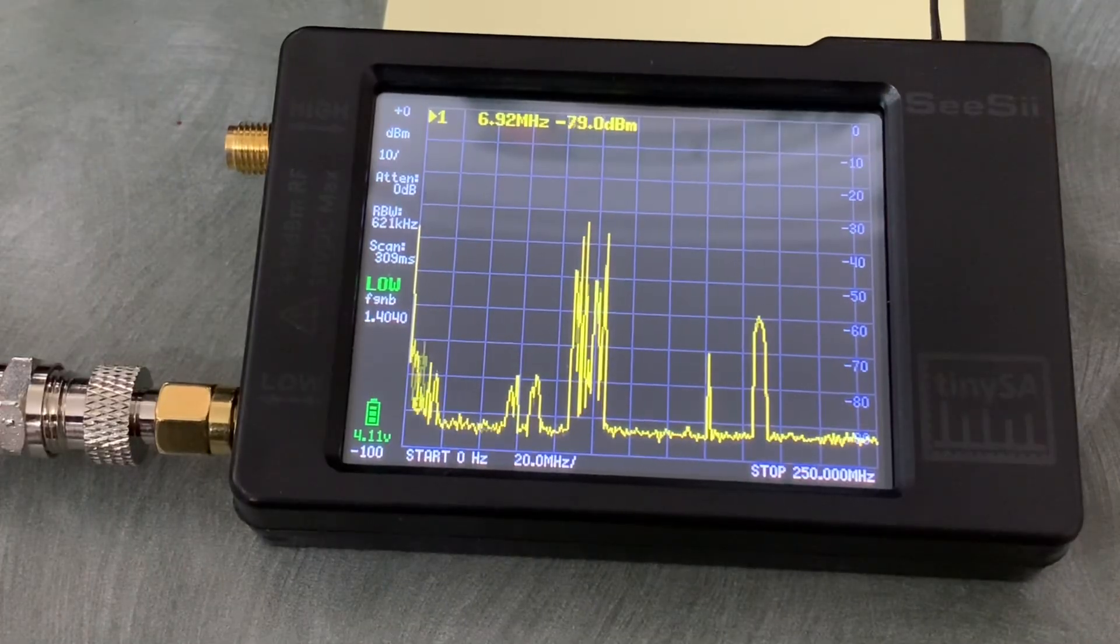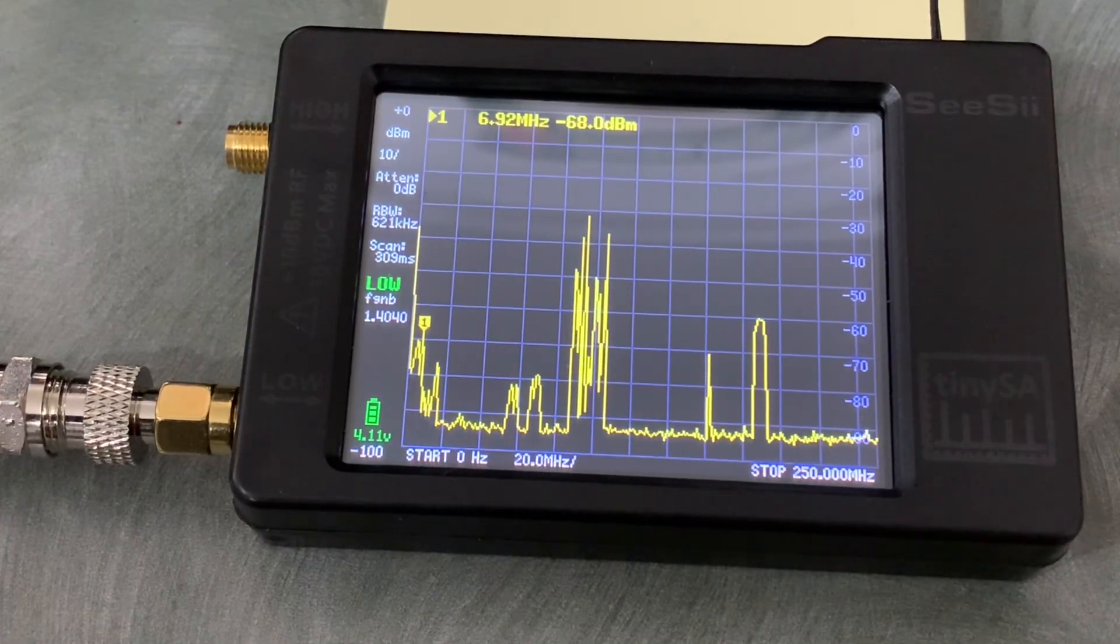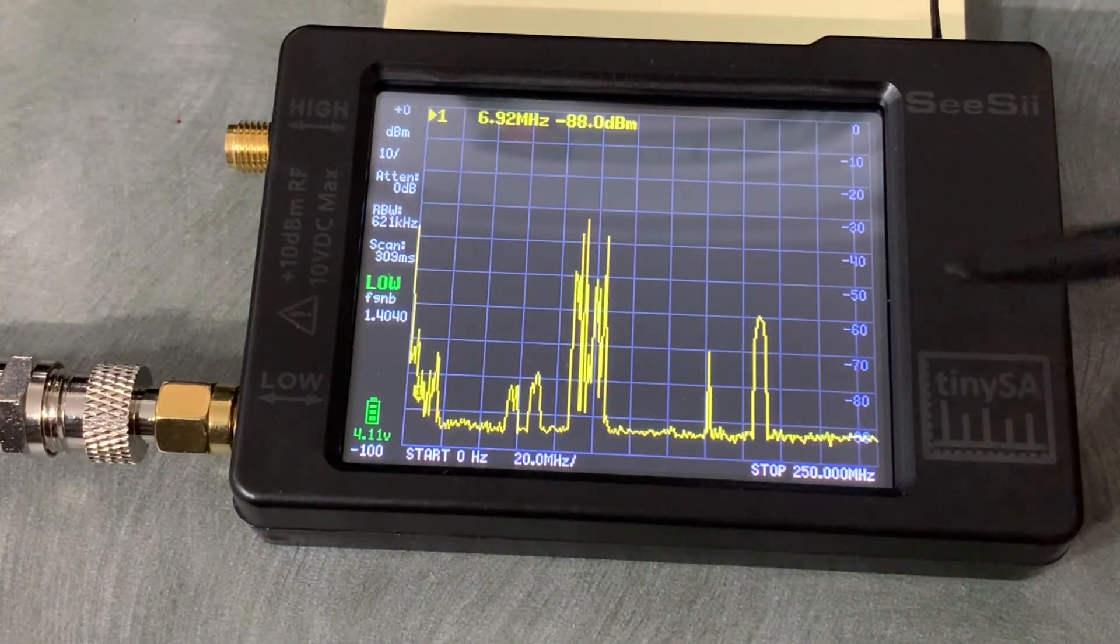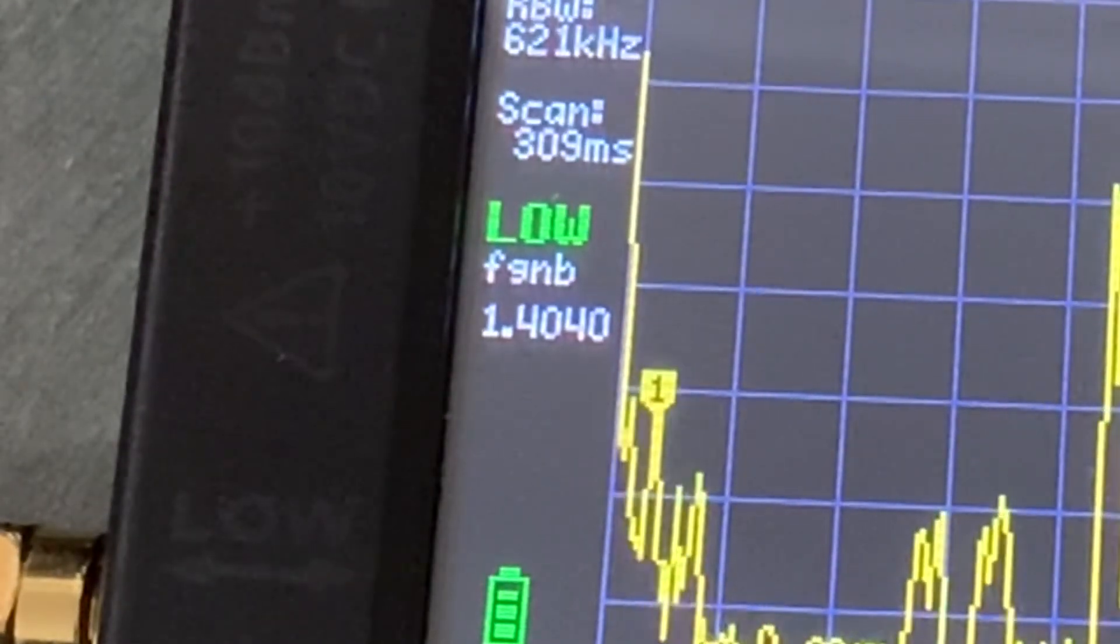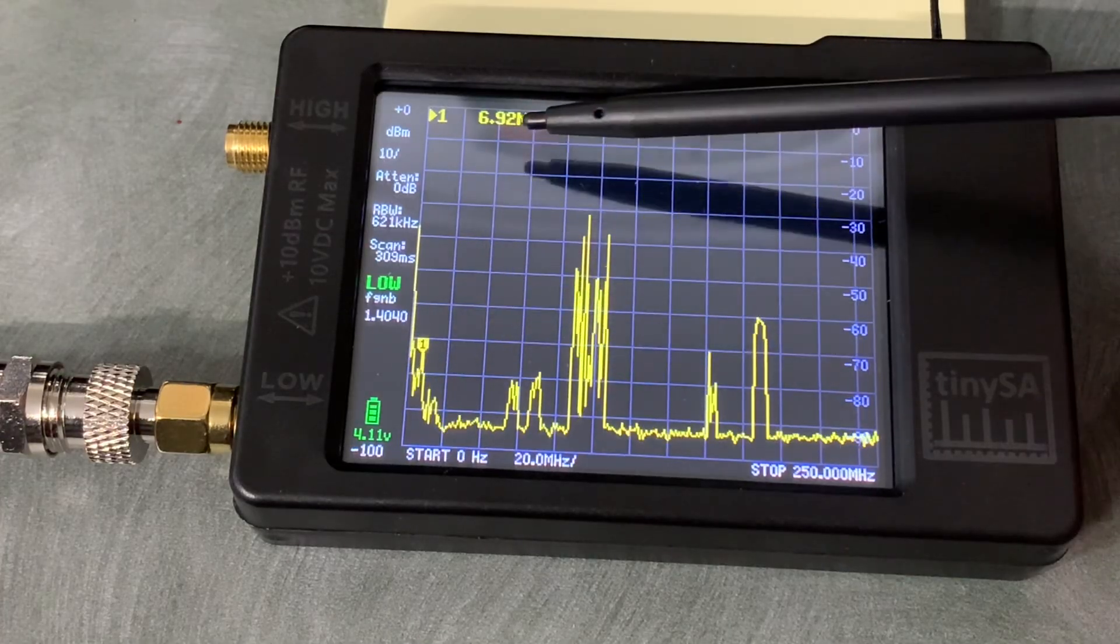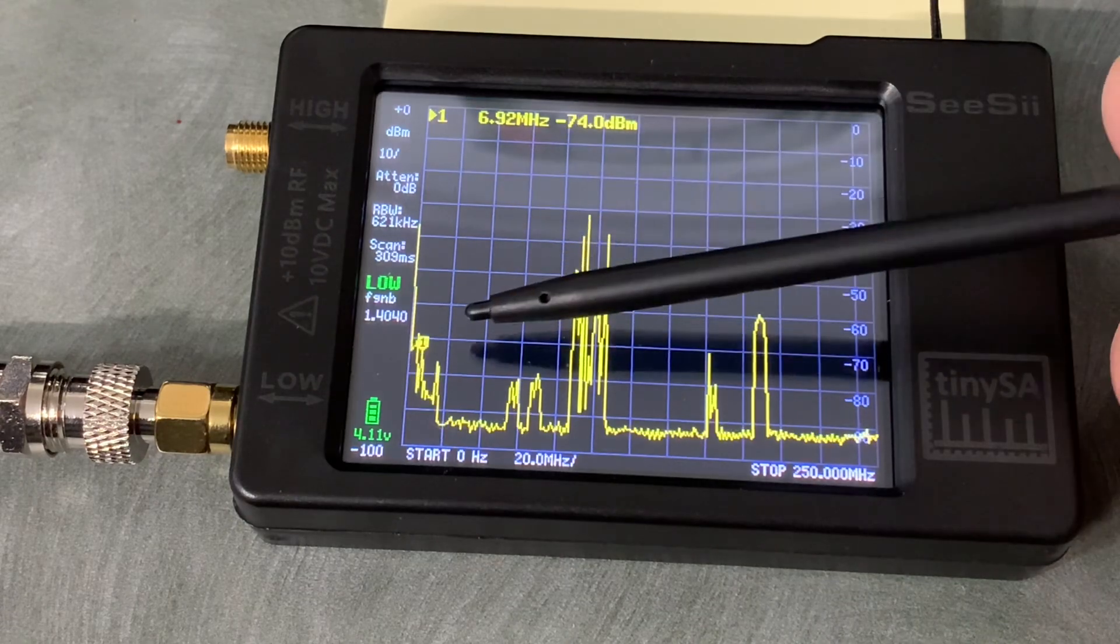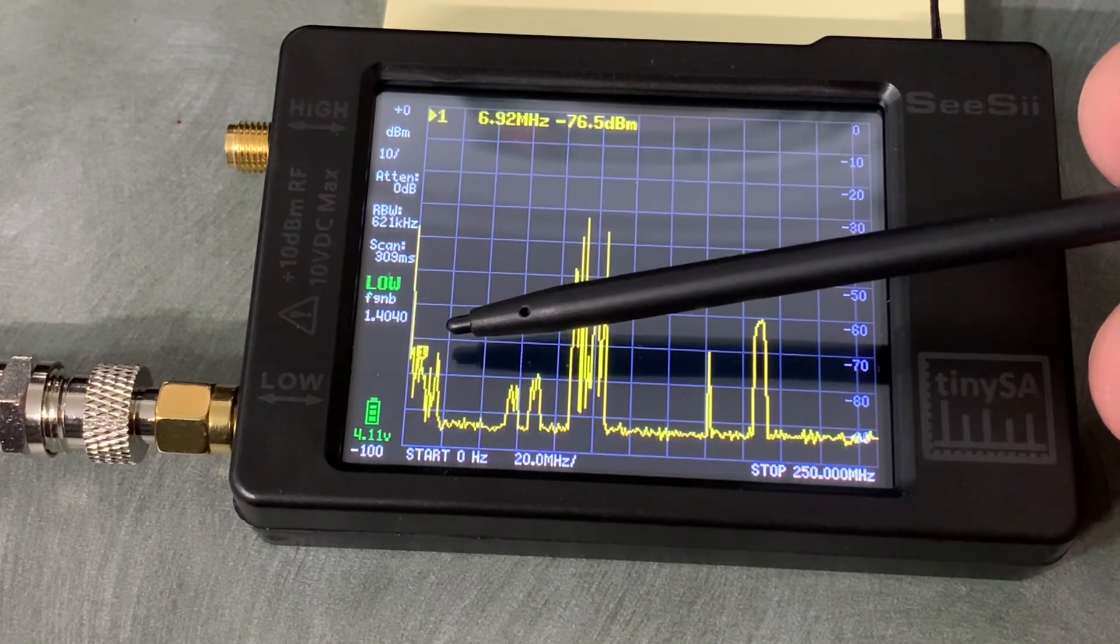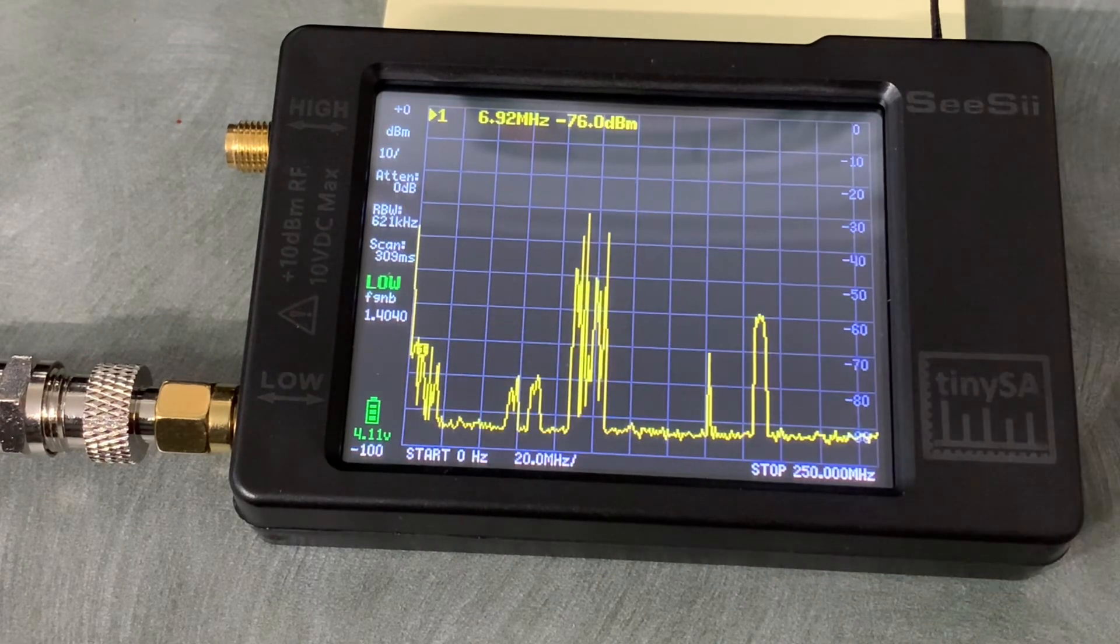We'll just have a look at the spectrum from 0 to 250 here. Now I've got the indicator, this little tiny number one here—that's the indicator at 6.92 megahertz. You can see that's bouncing up and down. I think what that is is probably all of the power supplies on my bench here.